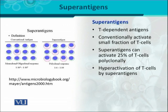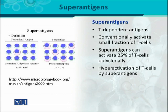Unlike conventional antigens that cause monoclonal or oligoclonal activation, super antigens activate T-cells in a polyclonal manner. As visible in the figure, different clones — many clones of T-cells — are being activated. These T-cells then undergo rapid proliferation. So super antigens are those antigens which have the ability to activate T-cells in a hyper manner compared to conventional T-cell dependent antigens.